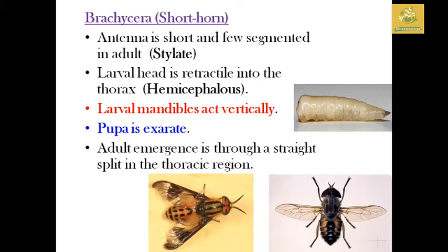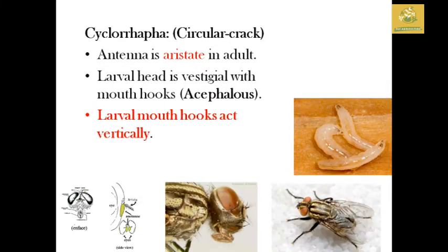The second suborder is Brachycera, the short-horn group. The antenna is short and few-segmented in adults, with a stylate type of antenna. The larvae have a retracted head, known as hemicephalous. Larval mandibles act vertically. The pupa is known as the exarate pupa, and adult emergence is through a straight split in the thoracic region.